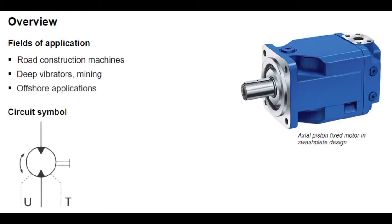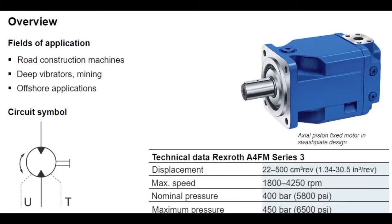The Rexroth A4FM Series 3 fixed motor comes in eight different sizes, from 22 to 500 cubic centimeters per revolution. Depending on size, the motor has a maximum speed range of 1,800 to 4,250 revolutions per minute at a nominal pressure of 400 bar, with temporary maximum pressure up to 450 bar.